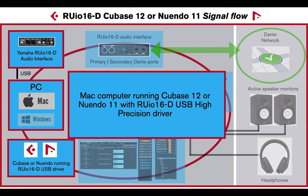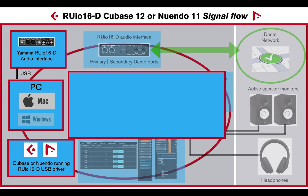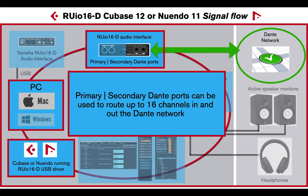Now if we take a look at the signal flow diagram of the setup example, I'm using a Mac computer running Nuendo 11 and the RU-IO 16D USB High Precision driver. I can route up to 16 channels in and out of the Dante network using the primary and secondary Dante ports of the RU-IO 16D.